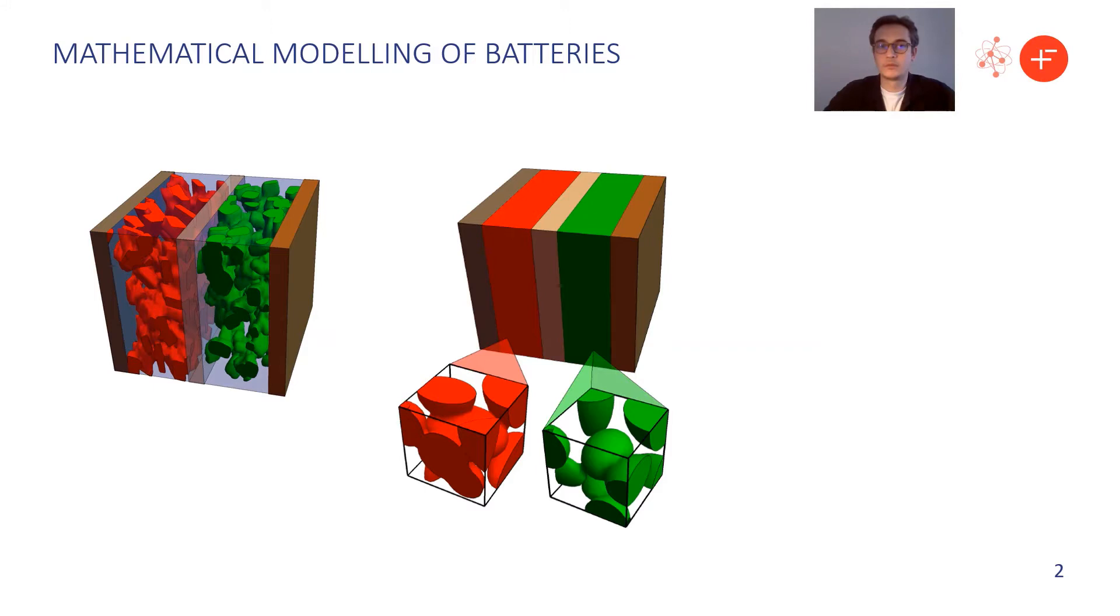So instead of solving one three-dimensional problem with complicated microstructure, we're solving two separate three-dimensional problems, one at the macro scale and one at the micro scale. And only the micro scale one contains this complicated microstructure.